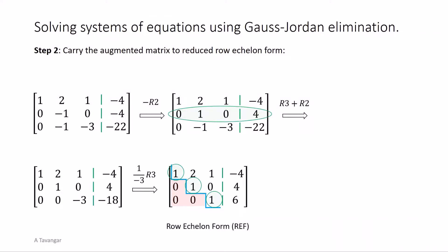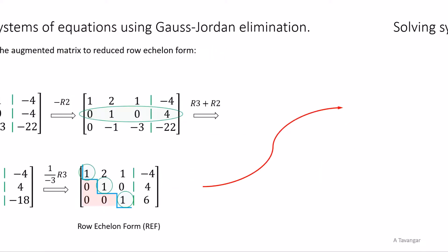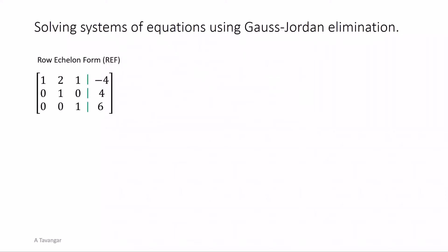The row echelon form matrix can be converted back to a system of equations and solved by back substitution. In this example though, we carry the matrix to reduced row echelon form and then obtain the solution. To carry the matrix to reduced row echelon form we need to use row operations to create zeros above each leading one as well. Beginning from the bottom right leading one of row three, we use row operations using row three to make the entries above the leading one of row three zero. The entry in row two and column three is already zero, so we move on to the next step.